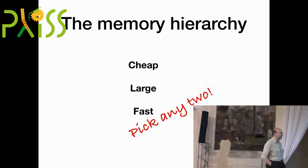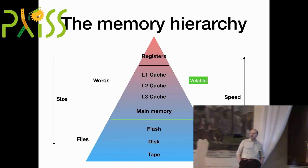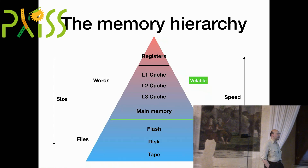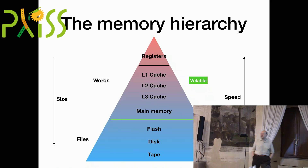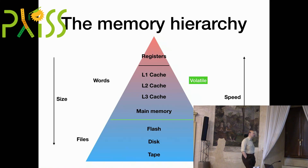The unfortunate part is you only get to pick any two of those in any individual technology. You can't make all three happen simultaneously. Instead, we developed a set of techniques to present the illusion of large, fast, and cheap. This set of techniques has evolved over the last 50 years into a pyramid picture where the bottom holds the most stuff in the cheapest way, and at the top we have the fast, small versions. There are some interesting discontinuities in this picture.